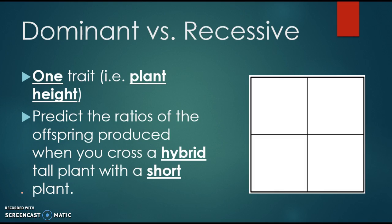In genetics, we are looking at questions that revolve around the inheritance of a particular trait and predicting how those traits will be expressed in future generations. One trait could be something like plant height, your eye color, or your ability to roll your tongue, to name a few.